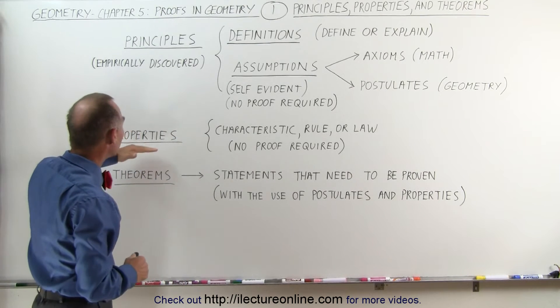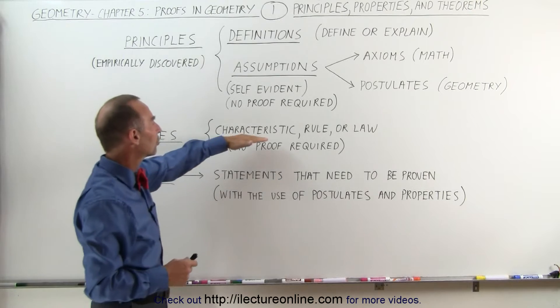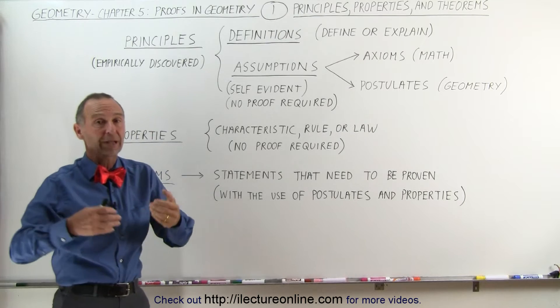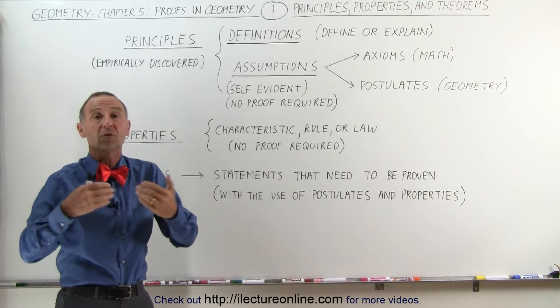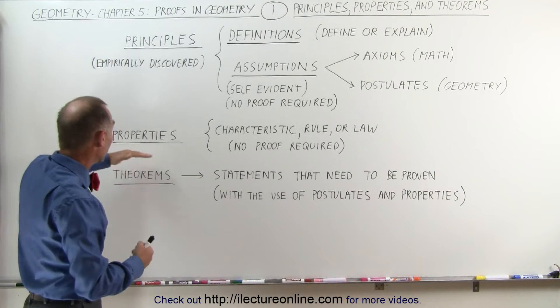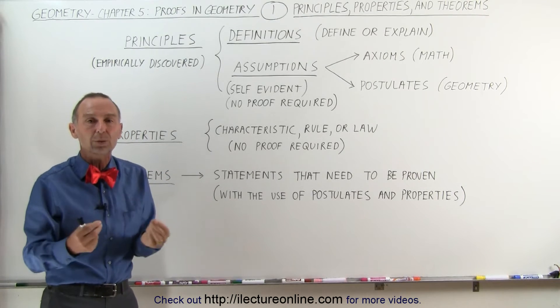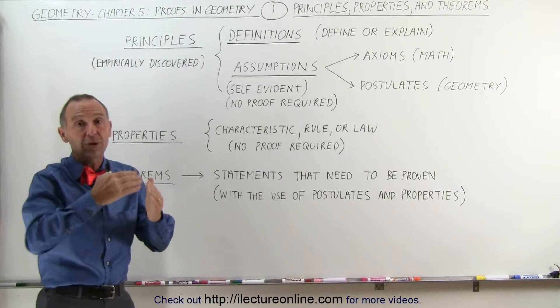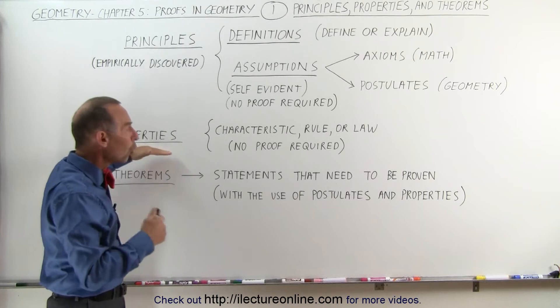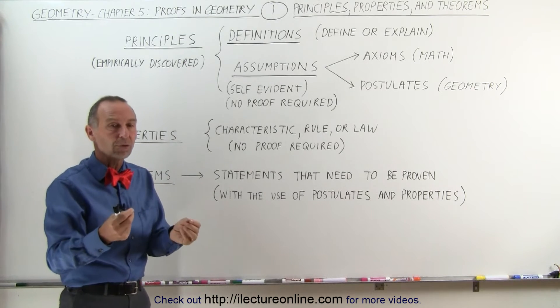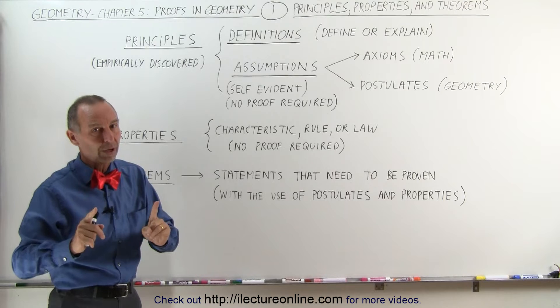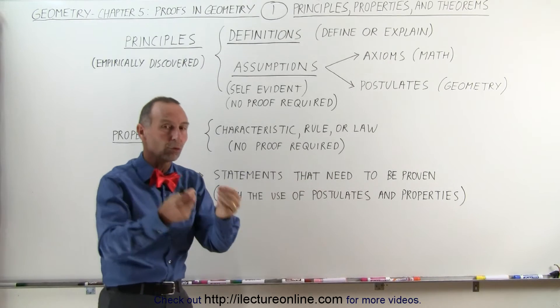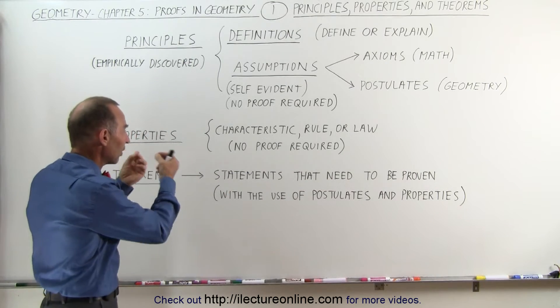There's a second category called properties. Properties are what we call characteristics, rules, or laws about a certain thing. For example, when we talk about a square, everybody would know that a square has four sides, and one of the properties of a square is that all four sides are equal to one another. So, that's a property about squares, and that the angles are all 90-degree angles. Those things can be used also to do proofs, because when we compare something to a square, then you know, oh, if it's a square, all sides are equal. Again, no proof required. We simply accept those, because those are the rules, those are the characteristics of the things that we're talking about.